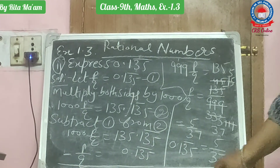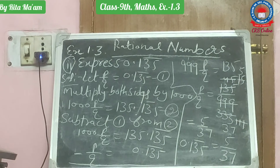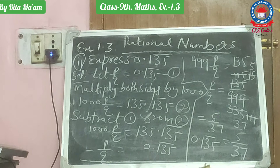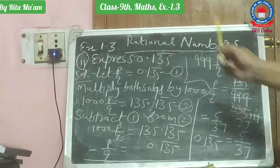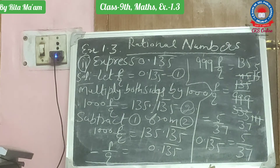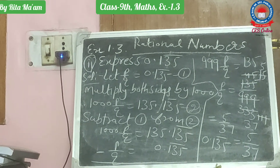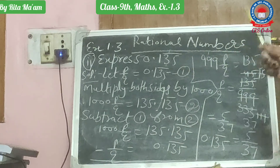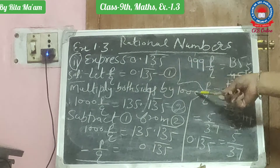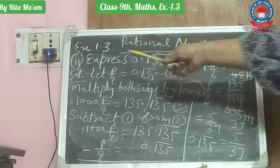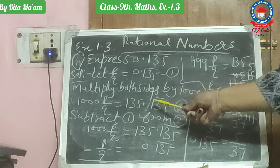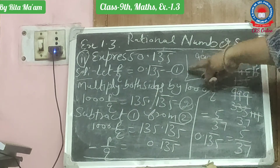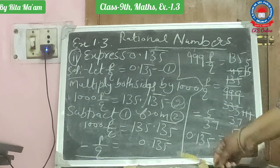Now I will tell you how a 3-digit repeating number can be expressed in P upon Q form, that is, as a rational number. In the same way, we will let this number equal P upon Q. Since 3 digits are repeating, we will multiply both sides by 1000. So 1000 P upon Q equals 135.135 bar. This is equation number 2, and the original was equation number 1.